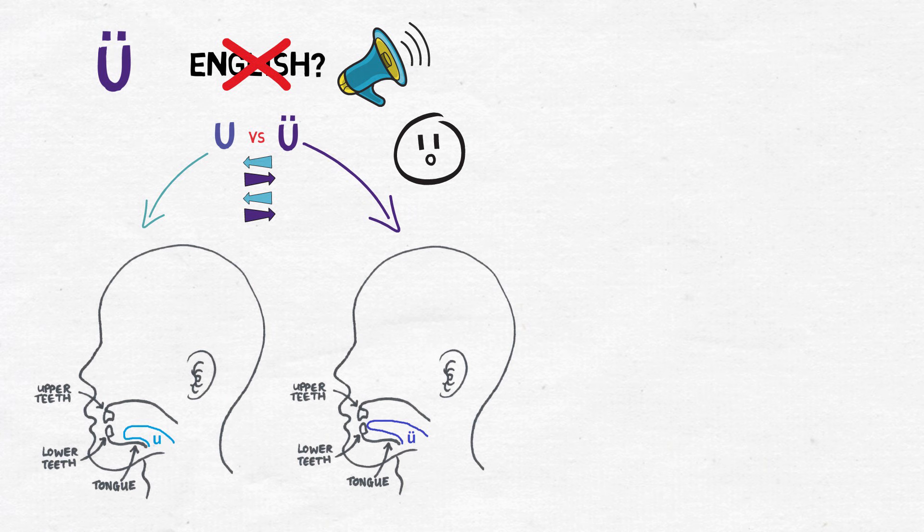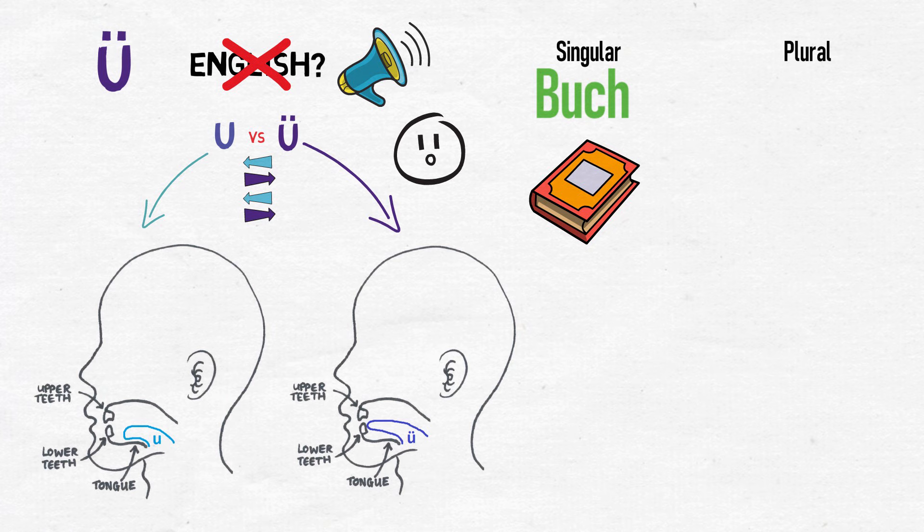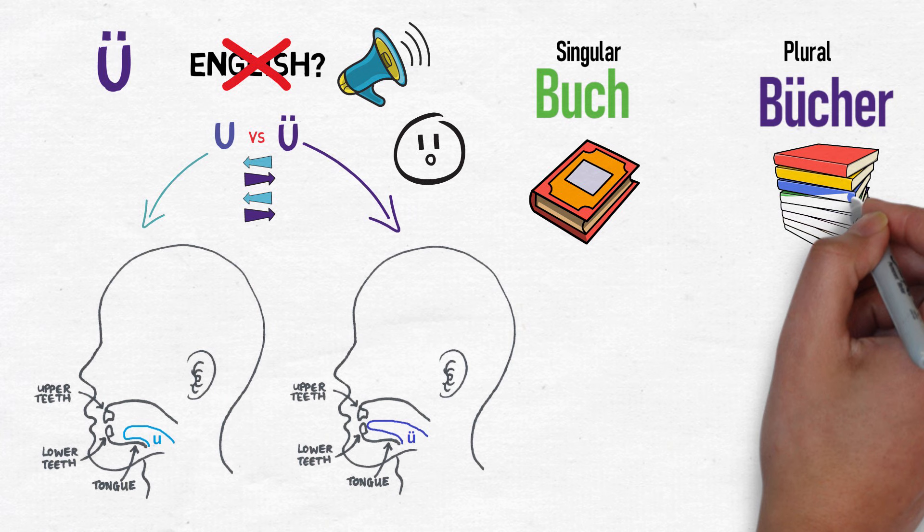Here are some examples of Ö being used in context. For example, Löffel with a short Ö, meaning spoon, as opposed to hören with the long Ö, meaning to hear or to listen to. Ö also helps form the plural of nouns: Buch meaning book becomes Bücher meaning books, and Tuch meaning towel becomes Tücher meaning towels.